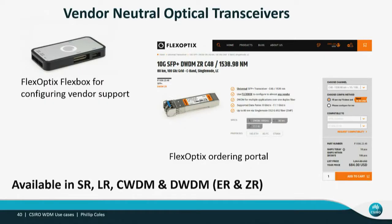We have SR, LR, CWDM 10 gig, and DWDM in ER and ZR in all of our network equipment with no issues. Flex Optics also provides a tunable optic where you can actually change wavelengths, so if you need a particular wavelength at a particular time, you can wind them up to the right wavelength with your Flex box. We'll often use those as an interim solution while we buy permanent ones, keeping them as a test or get-out-of-trouble card. The Flex box combined with different DWDM optics can also act as a basic OTDR or power meter, so there's a lot of usefulness out of that.